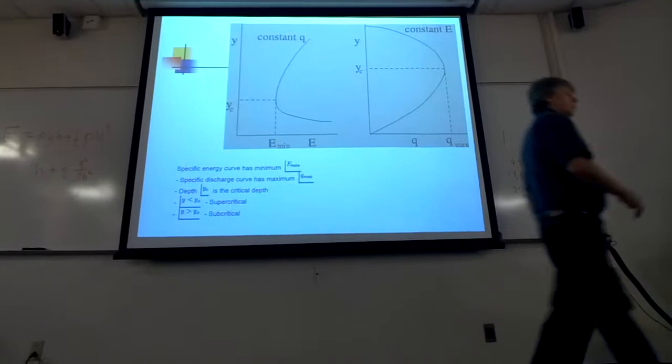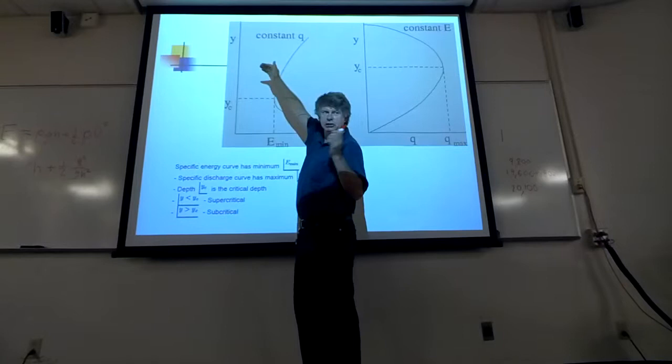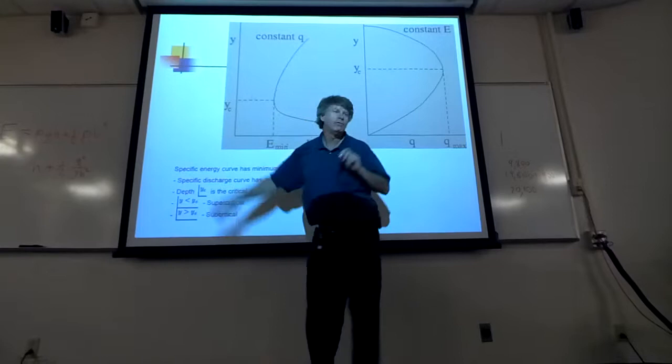We call the deep, slow flow subcritical flow. We call the shallow, fast flow supercritical flow.